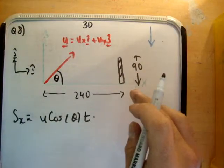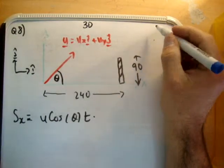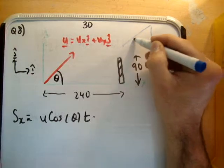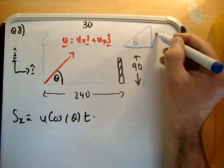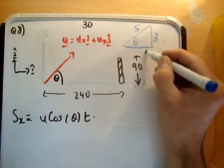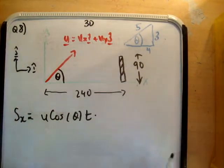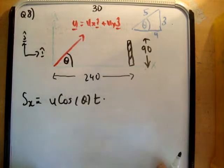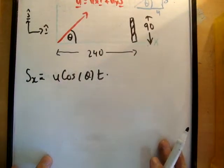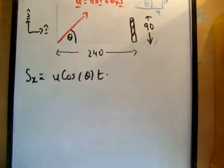So we're given that sin theta is equal to 3 fifths. So I'm just going to note this in the corner here. Just do a small bit of algebra and use Pythagoras theorem. You'll find that's 4 there. So cosine is 4 fifths. And we know that the initial velocity, we're just giving u.